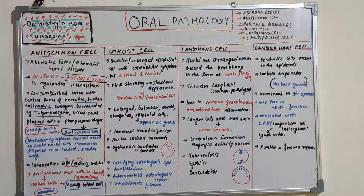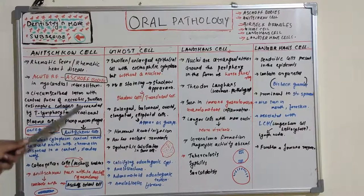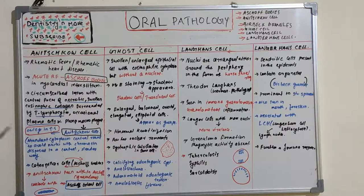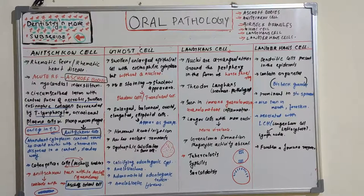Sometimes the Anishkov cell coalesces with the Ashoff's body, becoming an Ashoff's giant cell. Giant cells are multi-nucleated coalescences of various cells. So these two combine to form the Ashoff's giant cell. That is the Anishkov cell, seen in rheumatic fever or rheumatic heart disease — just like Reed-Sternberg cells in Hodgkin's lymphoma, each disease has its peculiar cell.